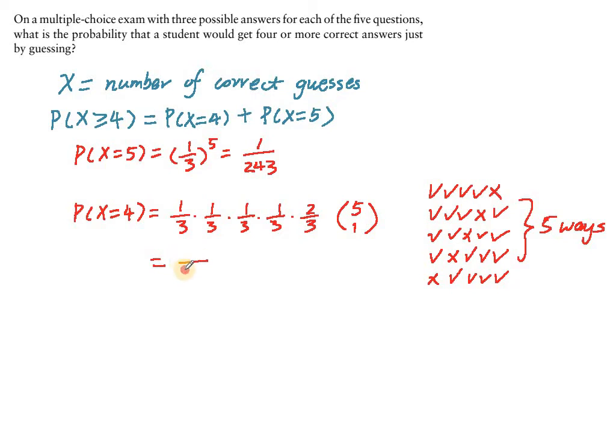So the answer is 10 over 243. Two times five is ten. So final answer, probability of X greater than or equal to four is equal to 11 over 243.